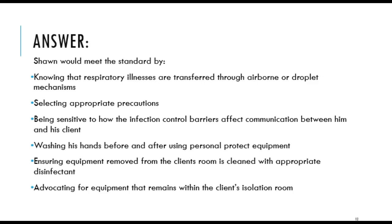Sean should also wash his hands before and after using PPE and between clients, and ensure that any equipment removed from the client's room is cleaned with appropriate disinfectant. He should advocate for equipment that remains dedicated to the client's isolation room — such as a blood pressure cuff and basin — so those items are not used on other patients without proper disinfection. This is how Sean applies the chain of infection principles to prevent the spread of infection.